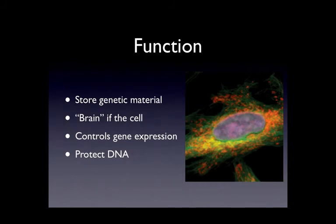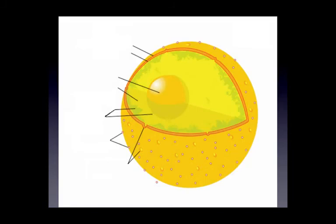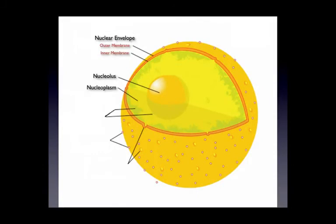All expressed traits of an organism originate from the DNA that is protected in the nucleus. Here is a lovely diagram of the nucleus and its sub-organelles. These organelles include the nuclear envelope, consisting of an outer and inner membrane; the nucleolus, located in the center of the nucleus; and the nucleoplasm, which is a gel-like substance between the nucleolus and nuclear envelope.